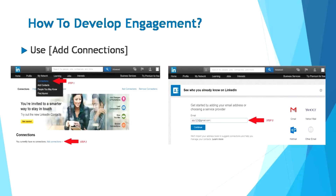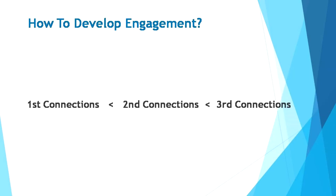By using the connections tier system, you can even get in contact with people that you're not directly connected to. First connections are the people who are directly connected to you, while second connections are people who are directly connected to them. Third tier connections are those directly connected to your second connections. This tier system allows you to invite second connections to connect, and you can also request to connect with third connections depending on their privacy settings, effectively enabling you to connect with almost anyone you might want to have serious business conversations with.